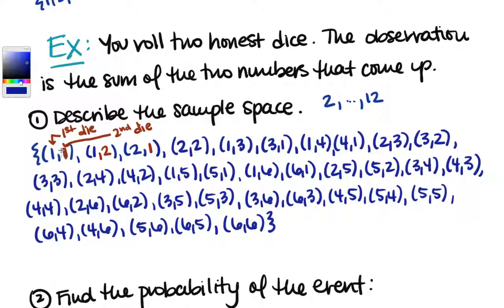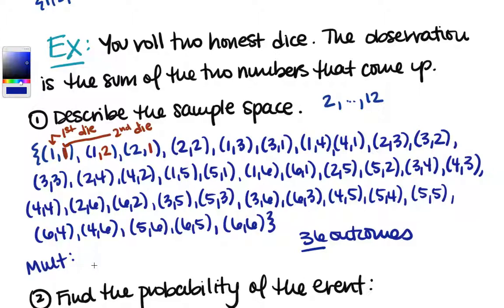If we count these up we see there are 36 total outcomes. We could verify that by counting, but we could also use the multiplication rule: we have 2 dice, 6 options for the first one, 6 options for the second, which gives 36. So we didn't just describe the sample space — we wrote out the whole thing, which makes it very clear.